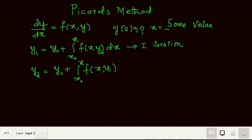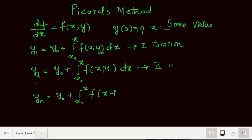Similarly, we can go for n iterations. For the nth iteration: yn = y0 + integral from x0 to x of f(x, y_{n-1}) dx, where y_{n-1} from the previous iteration is substituted before integration. This is the scheme of Picard's method.